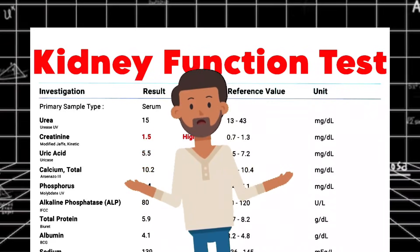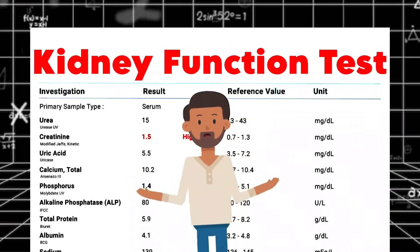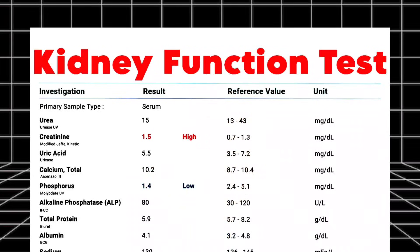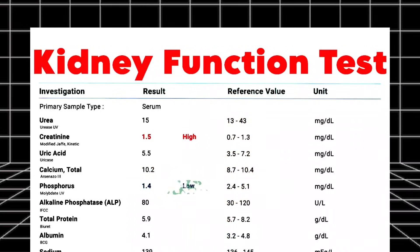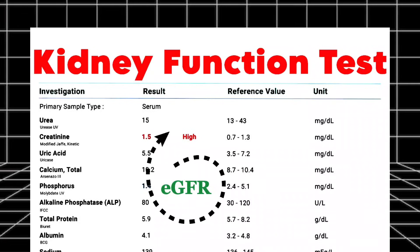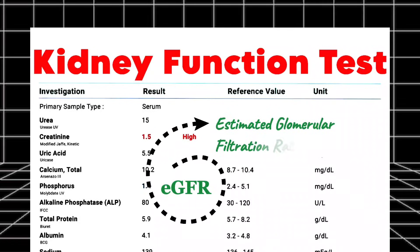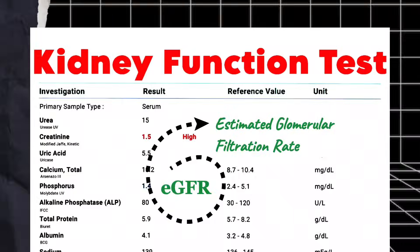High alkaline phosphatase is seen in kidney cancer, hepatitis, liver cancer, rickets, bone tumors, heart failure, and sepsis. Low alkaline phosphatase is seen in malnutrition, vitamin deficiency, certain drug therapy, hypophosphatasia, Wilson's disease, and pernicious anemia. Before moving to total protein, we need to discuss one more component of the kidney function test that is missing in this report — can you guess? It's eGFR.